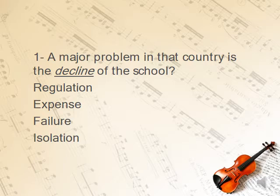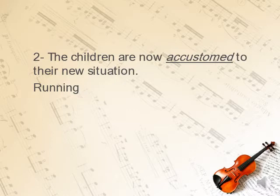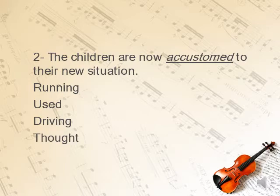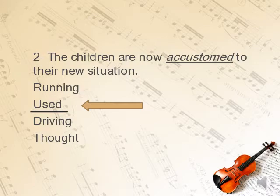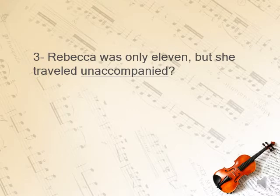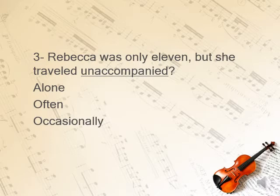Question 1: A major problem in the same country is the decline of the school. What is the meaning of 'decline'? The options are regulation, expense, failure, or isolation. Decline means failure. Question 2: The children are now accustomed to their new situation. Accustomed means used to. Question 3: Rebecca was only 11 but she traveled unaccompanied. Unaccompanied means alone.